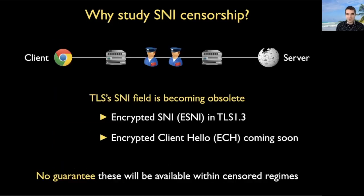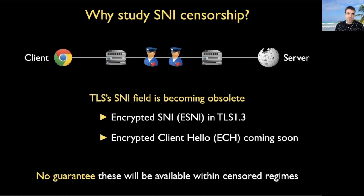Before I conclude, I wanted to end with a quick discussion on why we should bother studying SNI-based censorship — because TLS, the standard, is continuing to advance in a way that hopefully makes the SNI field obsolete. There's encrypted SNI, or ESNI, in TLS 1.3, already rolled out and on the market, and there's also encrypted client hello, or ECH, coming soon. Both promise to eliminate the SNI field as we know it. Unfortunately, there's no guarantee these privacy-preserving features will be available within censoring regimes. Just last year, China took the drastic step to block all use of ESNI in the country, stopping its rollout dead in its tracks. For that reason, we believe it's important to continue studying SNI-based censorship.